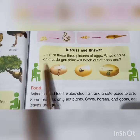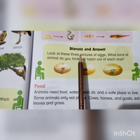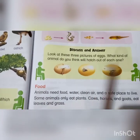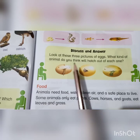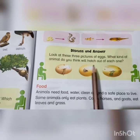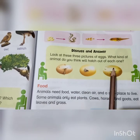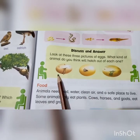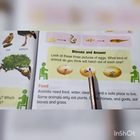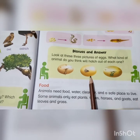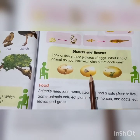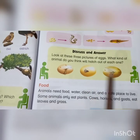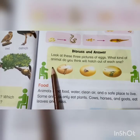Look at the picture of the eggs and think about what kind of animal will hatch out of each. You can see the three pictures and you will tell me which type of eggs these are and which animal will hatch. Okay?